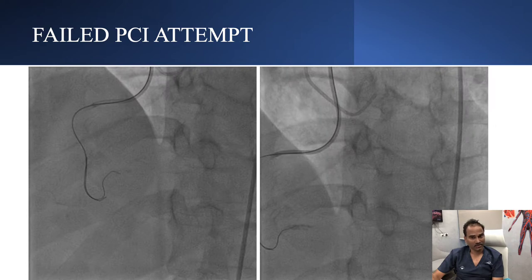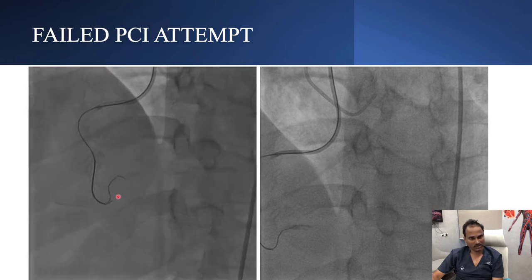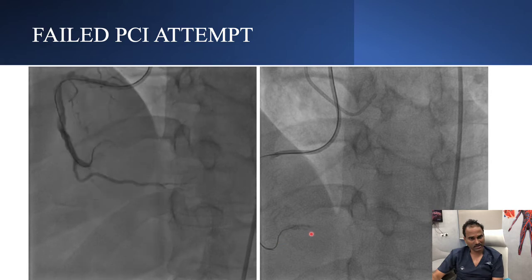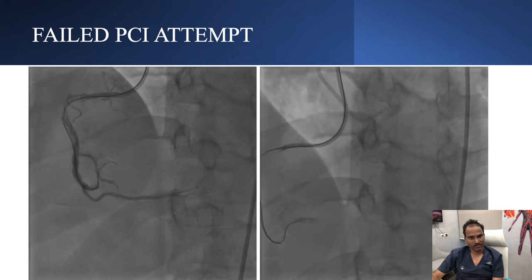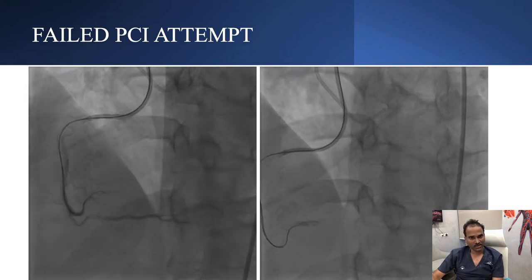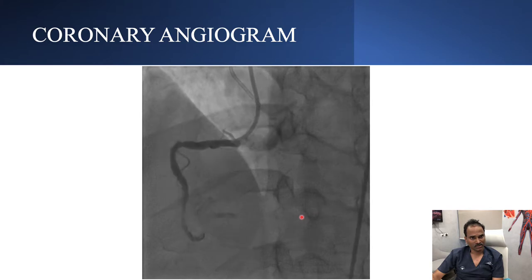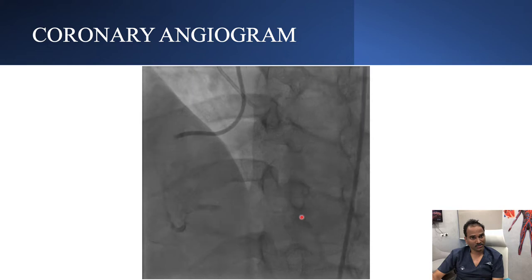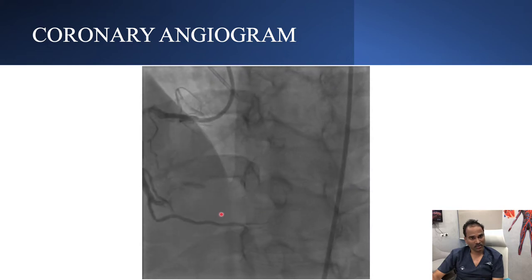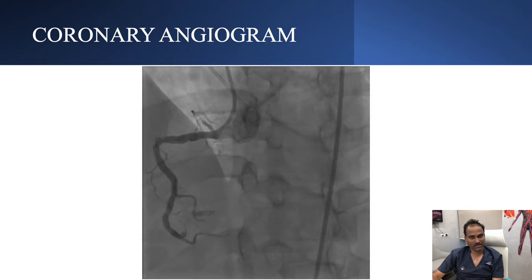Initial attempt was done outside, in which they could pass wires into the CTO, but it was abandoned since the operator was not clear about the course of the vessel. That's when the patient came to us for the PCI. This was his dual injection at the end of his first procedure, which revealed some contrast flowing into the lesion site, but overall the wire ended only in the mid CTO.